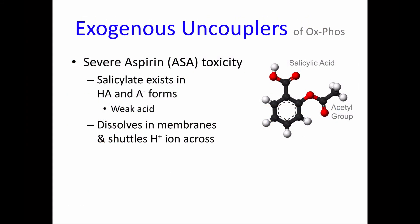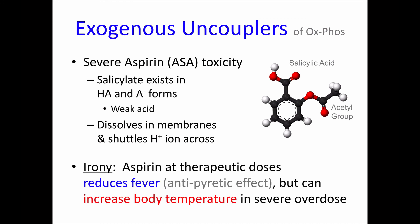Aspirin is another drug that can uncouple oxidative phosphorylation, although only at levels seen with severe toxicity — because aspirin, like DNP, can exist in both protonated and unprotonated forms and can dissolve into membranes and shuttle H+ ions across. The ironic thing is that at therapeutic doses, aspirin is an antipyretic and reduces fever, but with severe overdose, it can raise your body temperature.